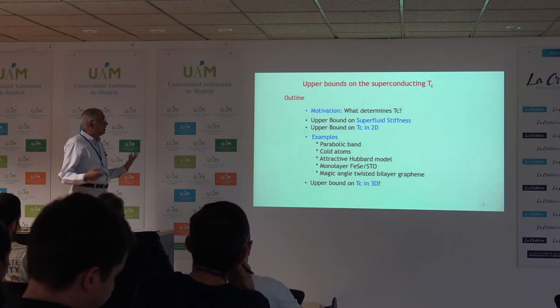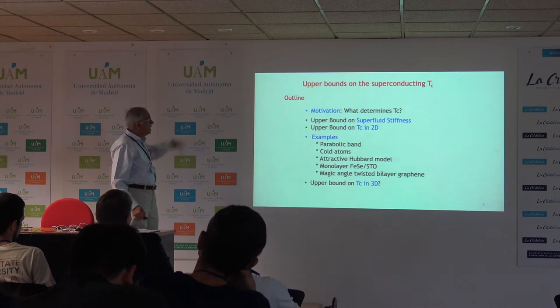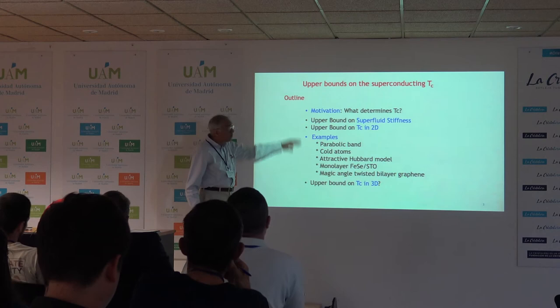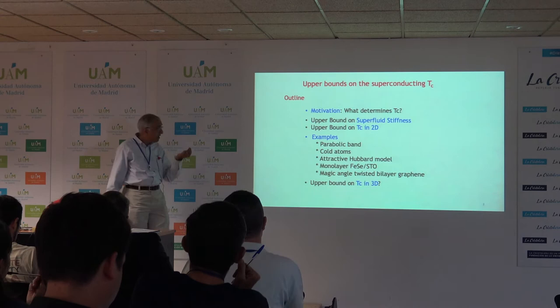Here is my outline. I want to first motivate the problem — if it actually needs any motivation in this audience. Then I want to talk about some rigorous upper bounds on the superfluid stiffness and TC in two dimensions. That's sort of mathematical physics, so then I will give you a slew of examples on two-dimensional systems. I will also talk about the challenges to deriving such rigorous results in three dimensions and then conclude.